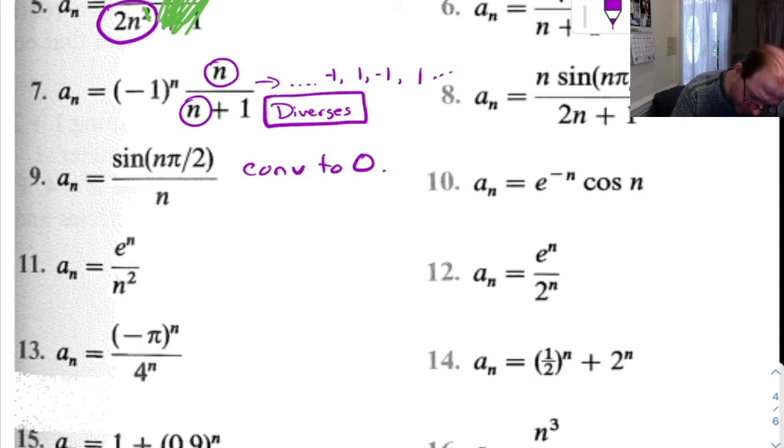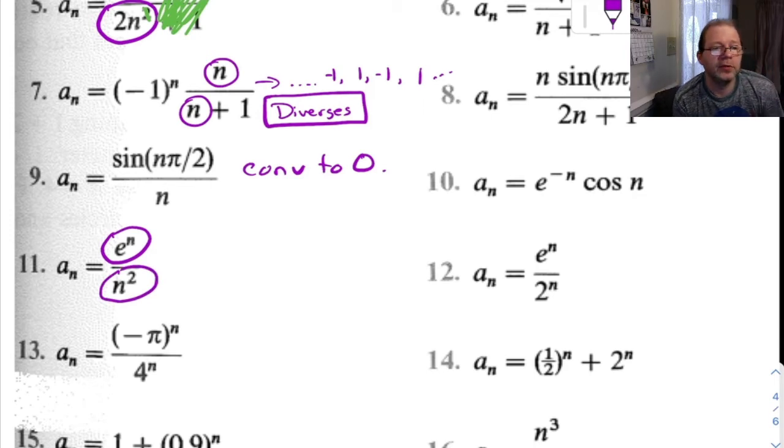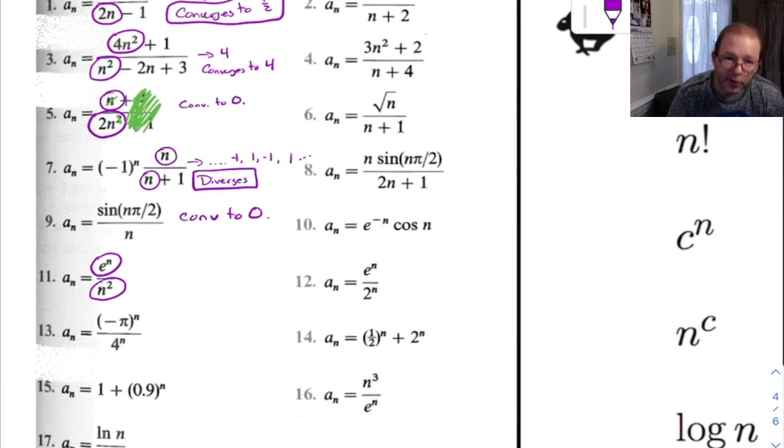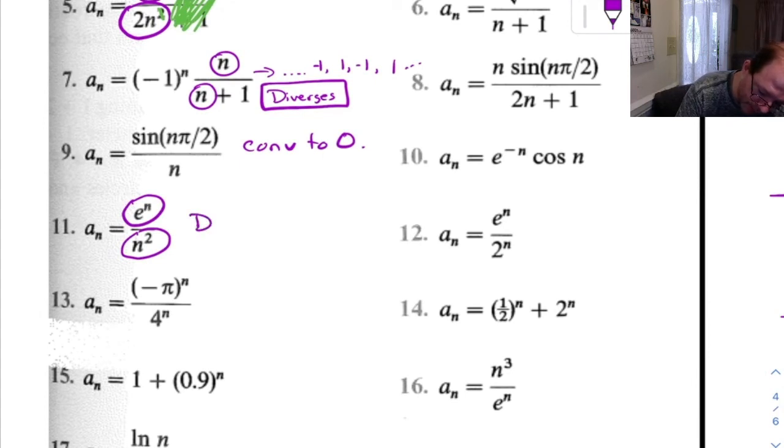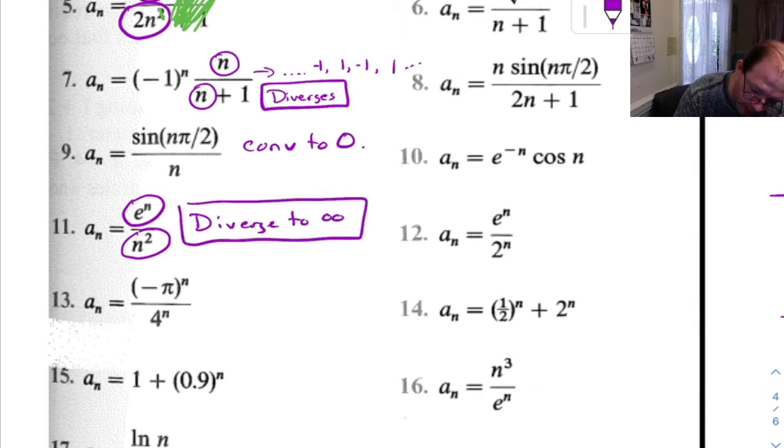Alright. 11. On top, we've got an exponential. On bottom, we've got a polynomial. So exponentials, according to our rabbit and turtle chart, exponentials always outrun polynomials. So this is going to diverge to infinity. And if you wanted to, you could graph that and see that if you graphed e to the x over x squared, you're going to see a graph that takes off really fast.